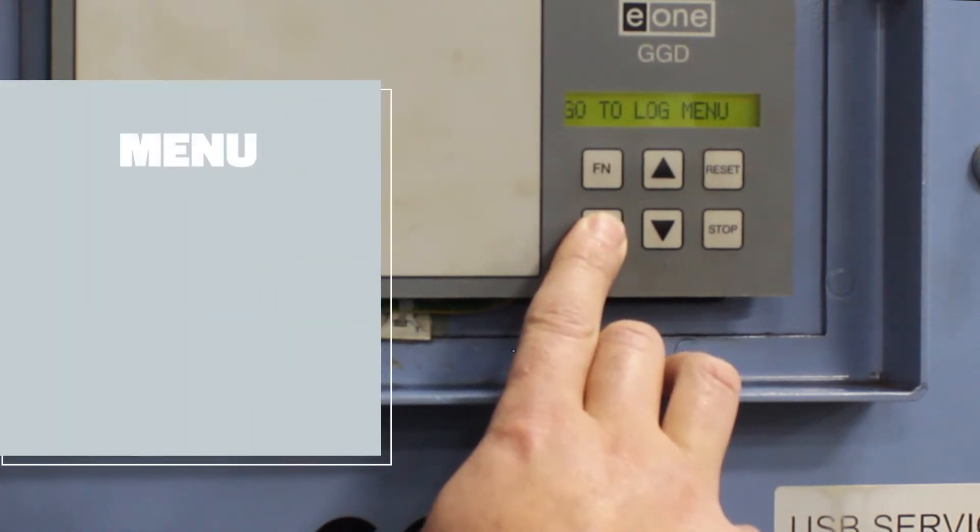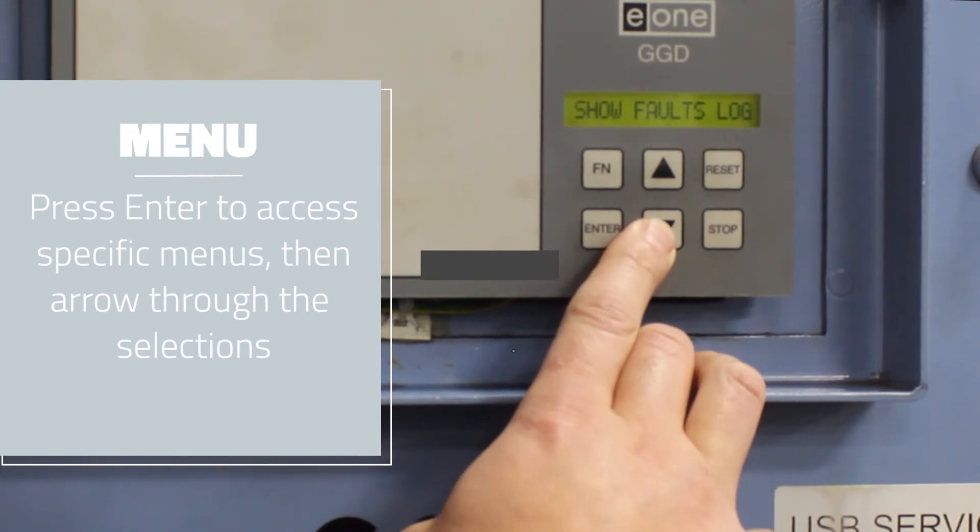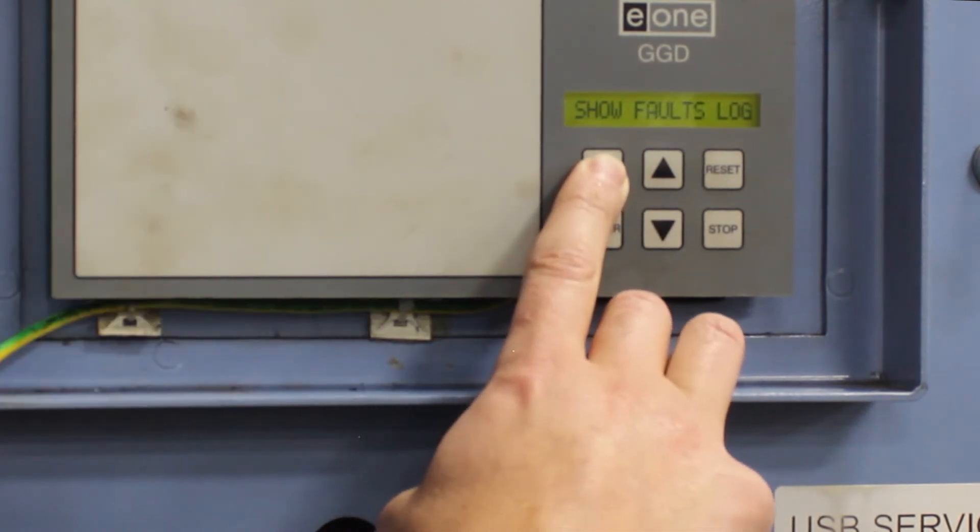To get into the specific menus, press Enter and you can go through the different selections. Show Faults Log, Show Power Log, Show Oil Timer, Show Event Log, Show Program ID, and then back to Faults Log.